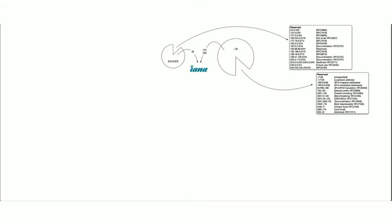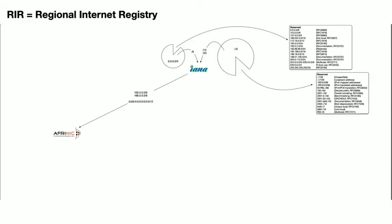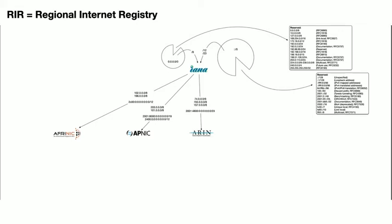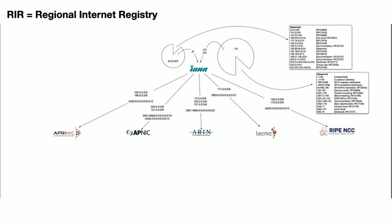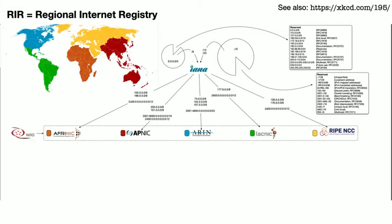Of the netblocks that remain available, IANA may then assign large chunks to the regional internet registries, such as the African Network Information Center or AFRINIC, the Asia-Pacific Network Information Center or APNIC, the American Registry for Internet Numbers or ARIN, the Latin America and Caribbean Network Information Center or LACNIC, and the Réseau IP européen Network Coordination Centre or RIPE NCC. Each of these RIRs manages the allocations for a specific geographical region, which illustrates the distributed nature of the internet, despite its obvious US origins.